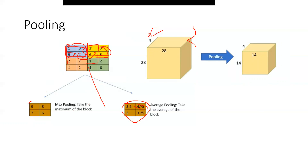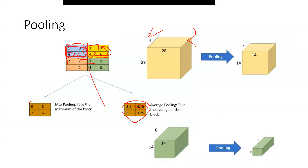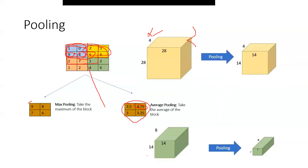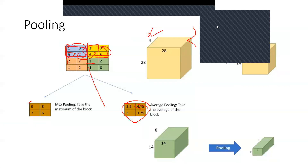By applying pooling, we reduce the size — for example, from 28 by 28 down to 14 by 14. If you apply pooling again, it would be reduced by two again for a two by two pool size, or by three for a three by three pool size. That covers what we discussed in this session. In the next session, we'll see how to concatenate all the layers — the convolutional layer, the pooling layer — and then pass them to the fully connected layer to generate an output. Thank you, and I hope this session was helpful.